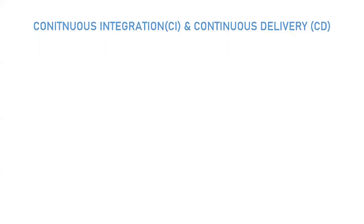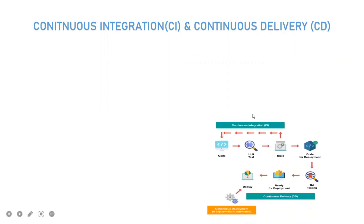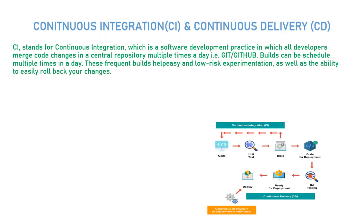Now let's understand what is continuous integration versus continuous delivery. CI stands for continuous integration, which is a software development practice in which all developers merge code changes into a central repository multiple times a day — that is, Git or GitHub. Builds can be scheduled multiple times in a day once you have committed or merged changes into the central repository, with the help of Jenkins.